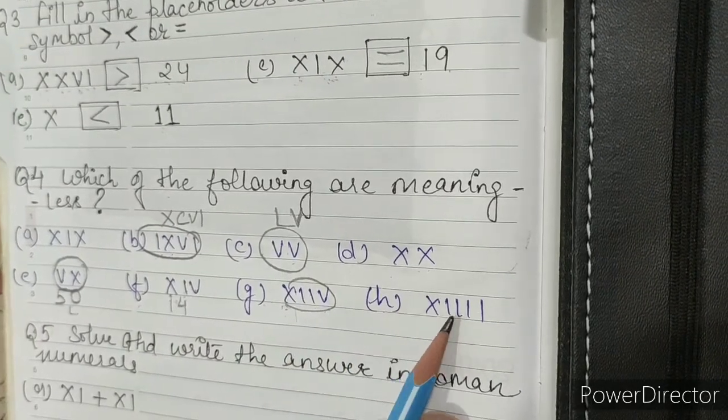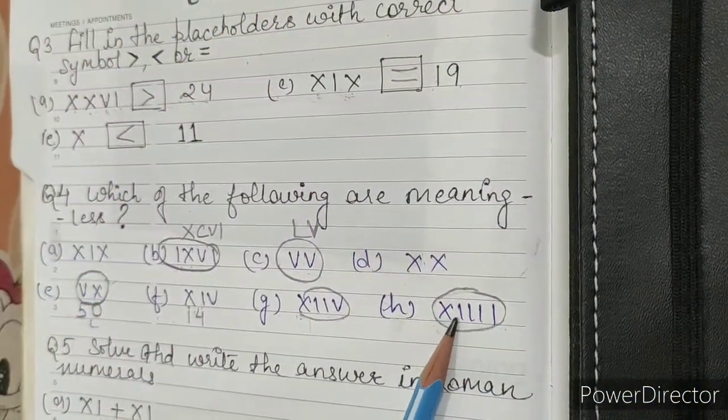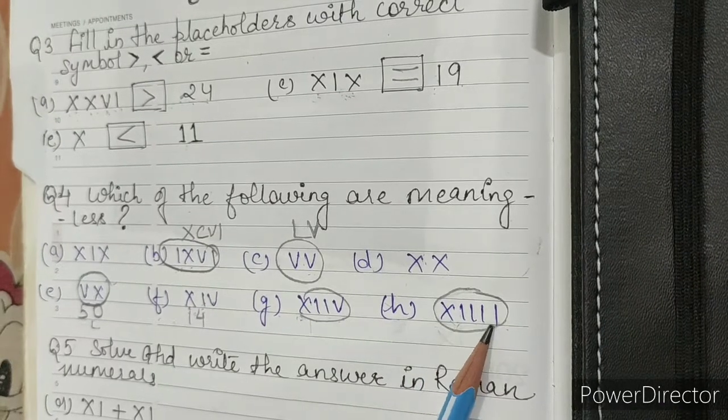Part H: XIIII. Meaningless because I cannot repeat itself more than 3 times.